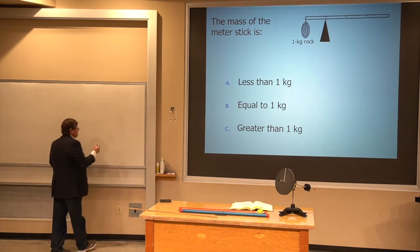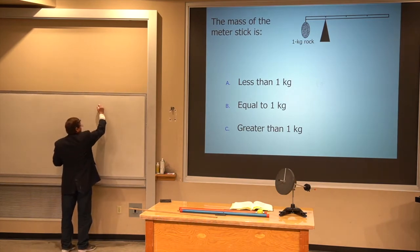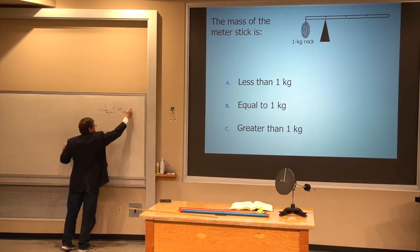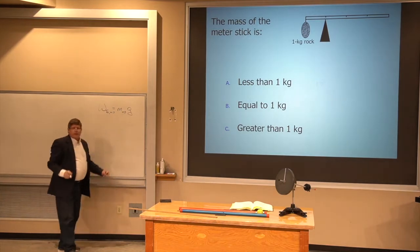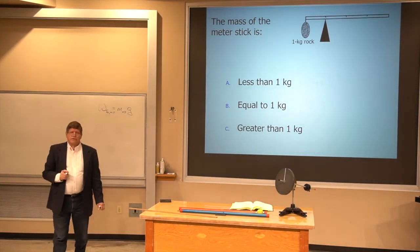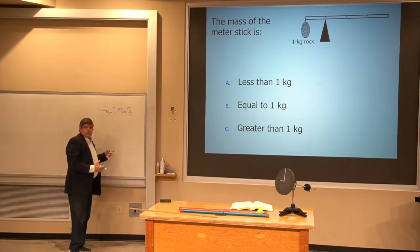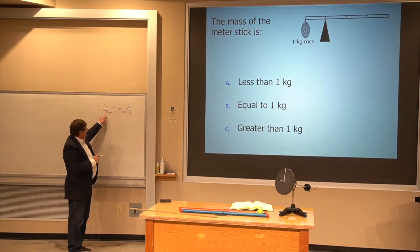I know that the weight of Earth acting on that meter stick is just the mass of the meter stick times G, where G is 9.8, let's call it 10 newtons for each kilogram. So, new goal. If I can find the weight force acting on that meter stick, I can easily find the mass.